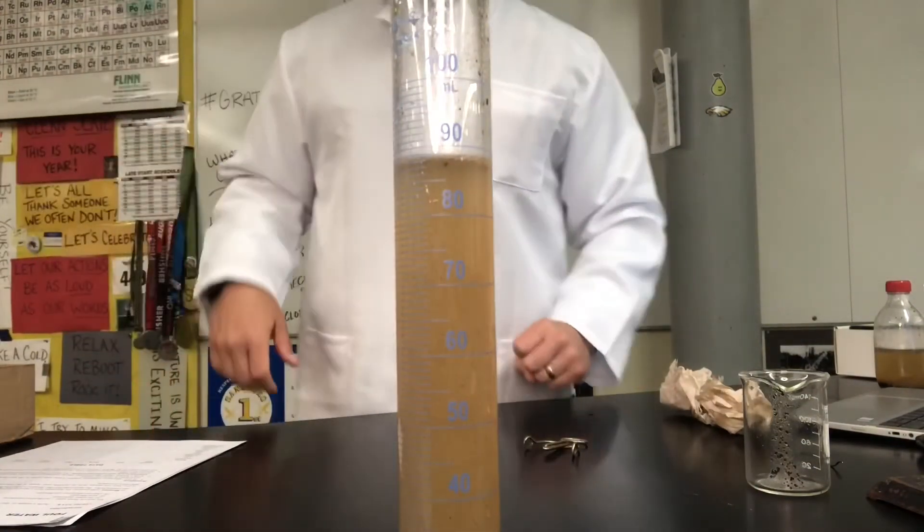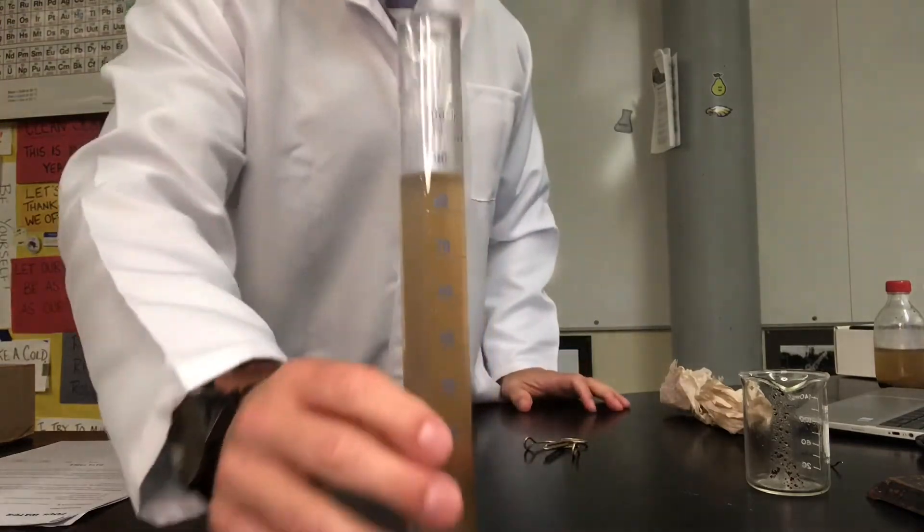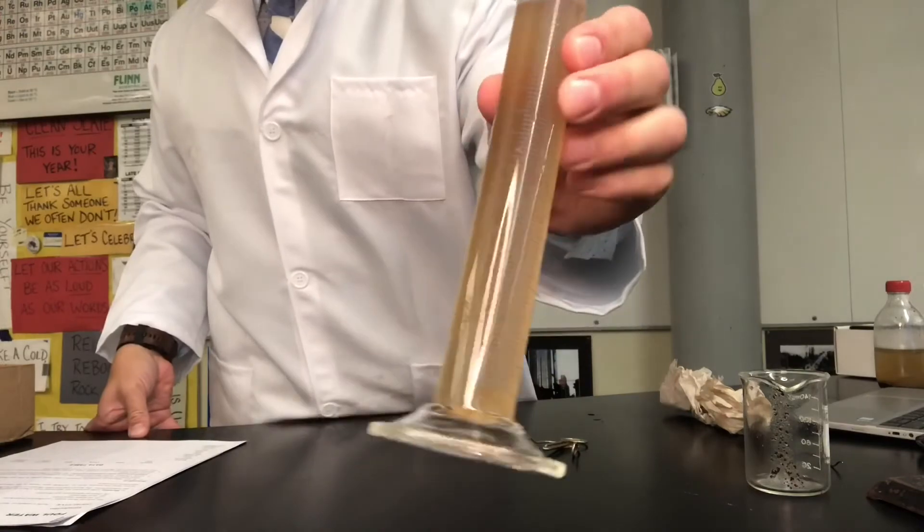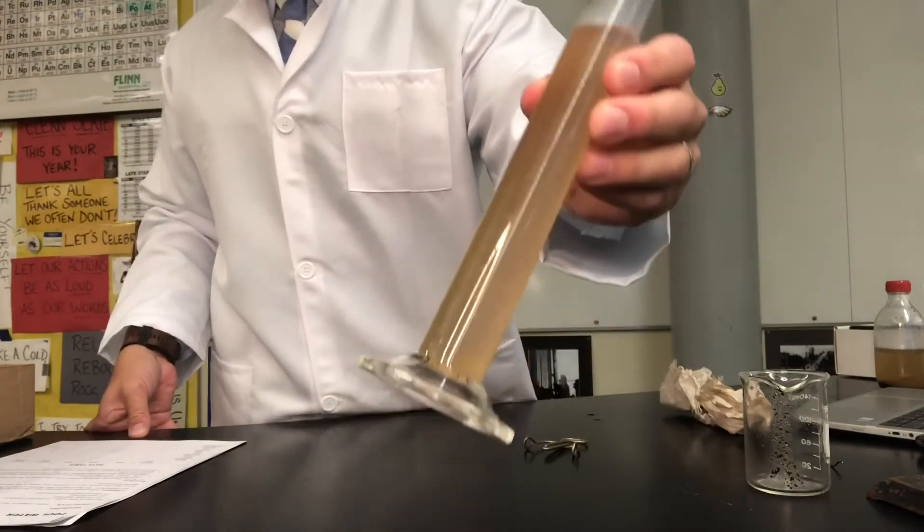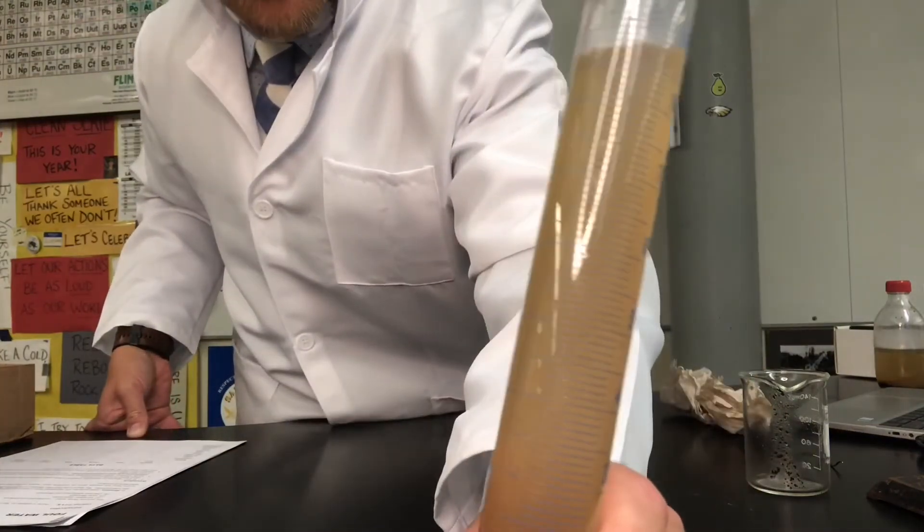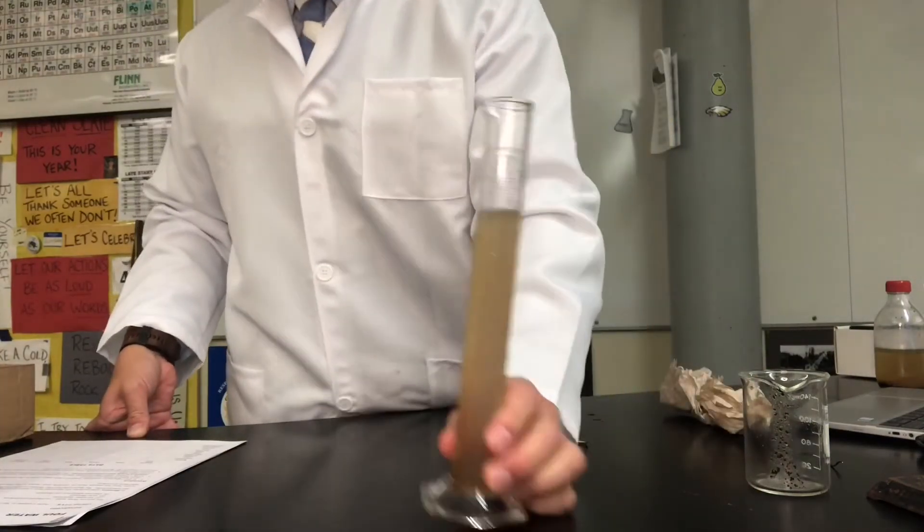So go ahead and write that down under after oil water separation there's 89 milliliters left. Now the color looks still about the same doesn't it? It's still that yellowish brownish beige color. As far as clarity it still looks pretty cloudy to me so nothing has improved with that.